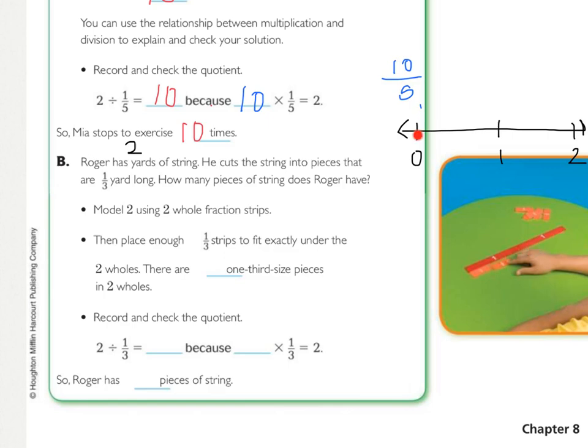on my number line, I have one, two holes. The next step, they say, is to place enough one third strips to fit exactly under the two holes. So basically, we're going to just divide this into one third pieces. Now, because this one third is based on a one hole, we can, again,